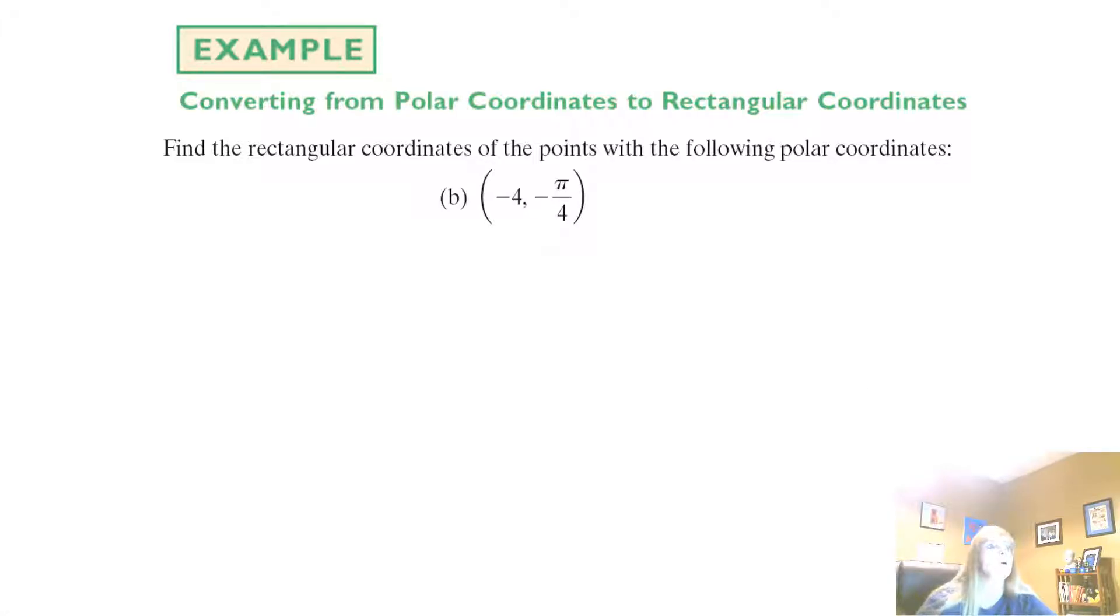Let's do another one. So let's say I have a negative. Okay? So let's see how this affects anything. So again, my x would equal my r times my cosine, and I even have a negative angle of negative pi over 4. And then my y would equal negative 4 sine of negative pi over 4.